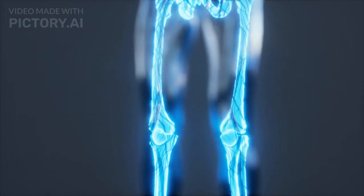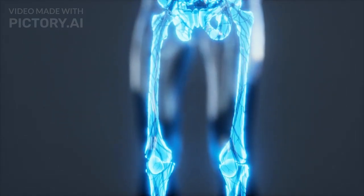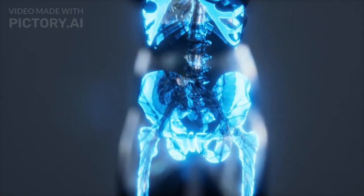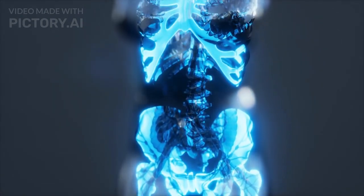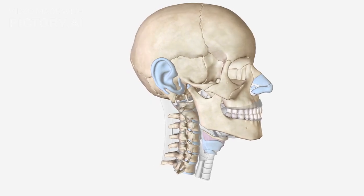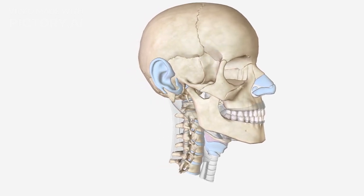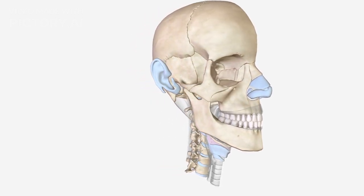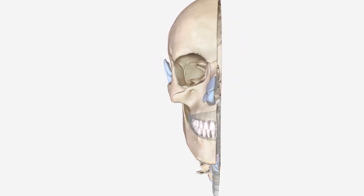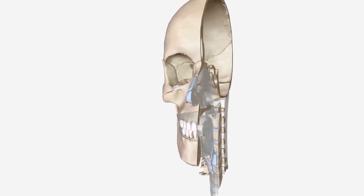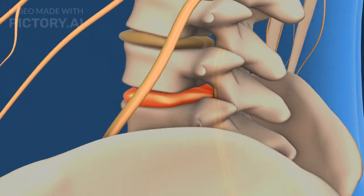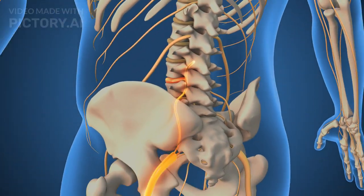Joints of our body play a crucial role in body movement by acting as the connection points between bones, allowing flexibility, mobility, and support. Joints are divided into three types. The first is fibrous joints, which are immovable — for example, skull sutures. The second is cartilaginous joints, which are slightly movable — for example, intervertebral discs.